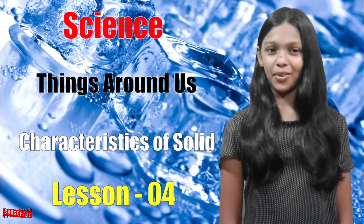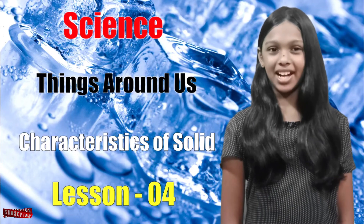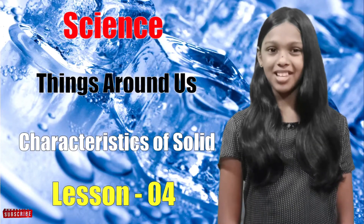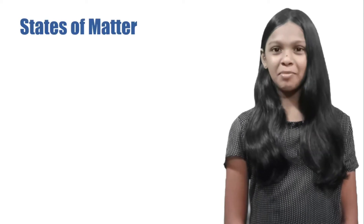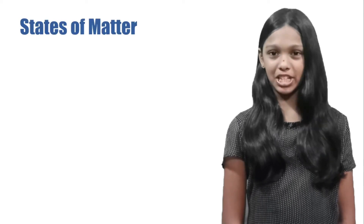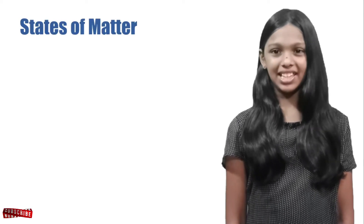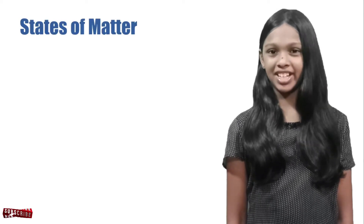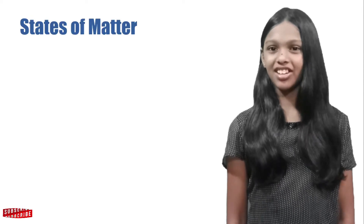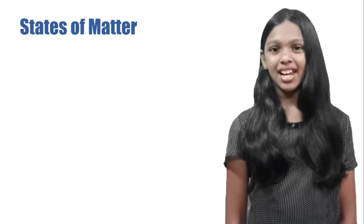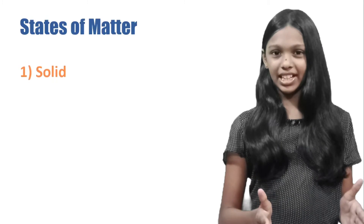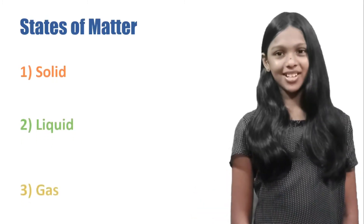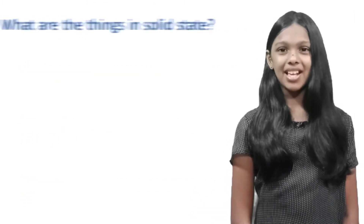Science — things around us: characteristics of solids, Lesson 4. As I stated in my previous video, different matter in the environment can be categorized under three states, namely solid, liquid, and gas. Let's look at some examples of things in solid state.